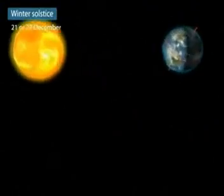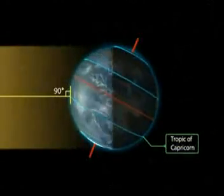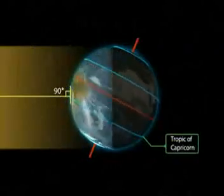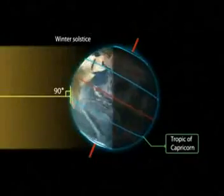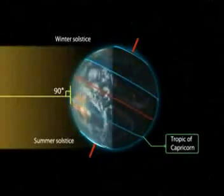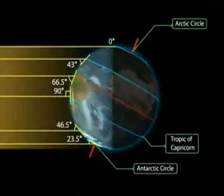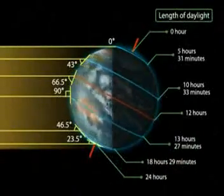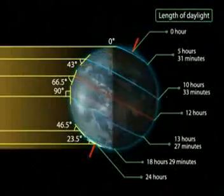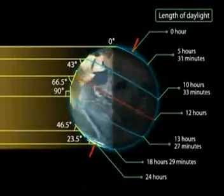Winter Solstice: On the 21st and 22nd of December, the overhead sun is over the Tropic of Capricorn. It receives the largest amount of solar radiation. On this day, the northern hemisphere is in the winter solstice, while the southern hemisphere is in the summer solstice. The angle of the sun decreases towards the poles. On this day, the length of daytime in the northern hemisphere is the shortest in the year, while that of the southern hemisphere is the longest in the year.